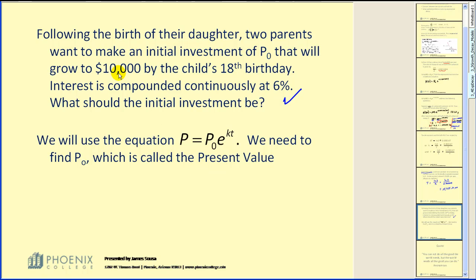So we want to have $10,000 into the future. That's our value of P. We want to know what that initial investment must be in order to obtain that $10,000. We know our k is 6% or 0.06.